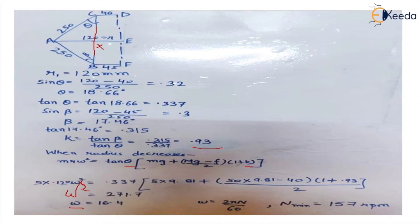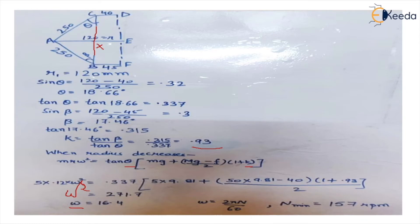The question arises: in the formula we have both Mg minus F and Mg plus F — how did we decide to use Mg minus F here? When the radius decreases, the ball moves downward; this is when the load is increasing and speed decreases. As the ball and the central load move downward, the frictional force acts opposite to the direction of motion — that is, in the upward direction — which is opposite to the weight acting vertically downward. So the expression becomes Mg minus F.